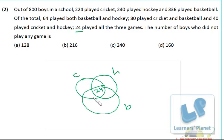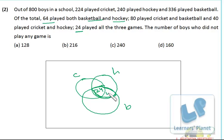24 is part of cricket, hockey, and basketball. Next, 64 played both basketball and hockey — this entire overlapping portion is 64. Since 24 is already in the center, the remaining 40 goes in the basketball-hockey region outside the center. Then cricket and basketball is 80 total, so with 24 in the center, 56 goes in the cricket-basketball region.